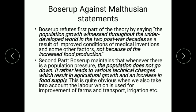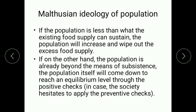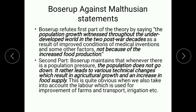That is the first statement against Malthus's theorem by Boserup. Regarding the second Malthusian statement — that when population is already beyond the means of subsistence it will come down to reach equilibrium — Boserup maintains that whenever there is population pressure, the population does not go down. It rather leads to various technical changes which result in agricultural growth and an increase in food supply. She refutes the chances of natural and positive checks, arguing that the economy will instead adjust by increasing the food supply.